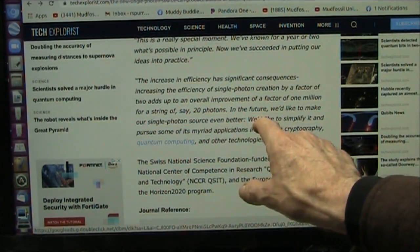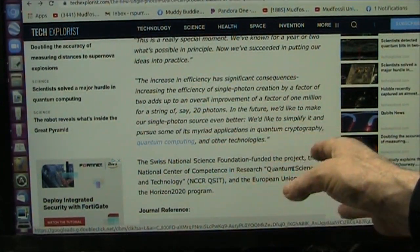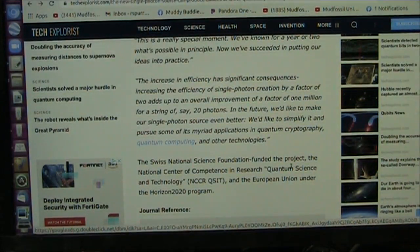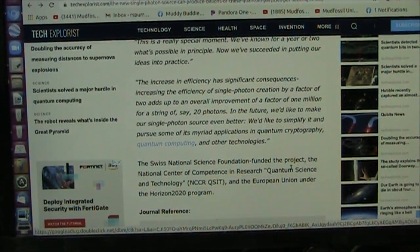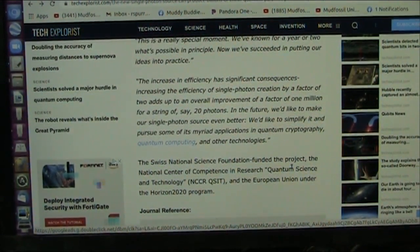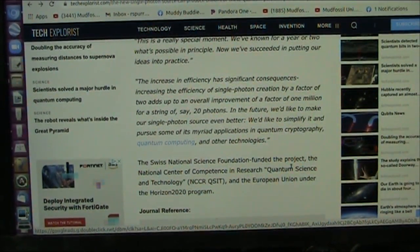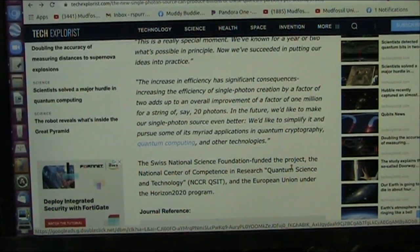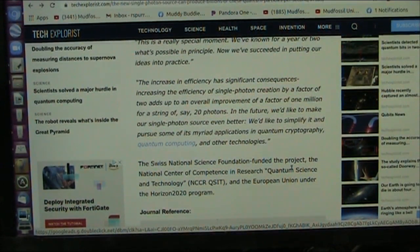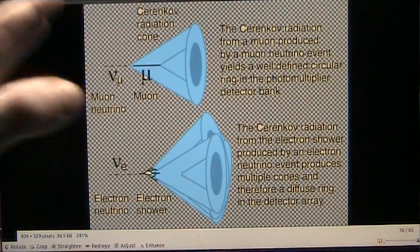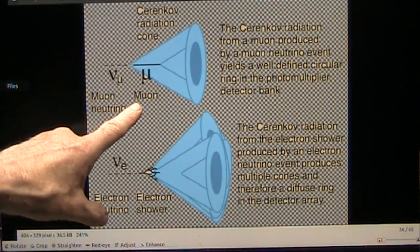Now we succeed in putting our ideas in practice. Have they done any quantum computing? I'd like to see the quantum computing if they did it already. We showed that we can do this, qubits. We showed this. That's not a problem. But can you use it to, did they compute? I don't think so. Since the increase in efficiency significantly has significant consequences, increase the efficiency of single photon creation by a factor of two adds up to an overall improvement of a factor of one million for a string of, say, 20 photons. In the future, we'd like to make our single photon source even better. I know how to make it better already. We'd like to simplify it and pursue some of its myriad applications. They haven't done anything with it other than done what Rod did. That's all that's been done. I'm sorry. It's Rod Warren's. He's the one that deserves the credit for this.